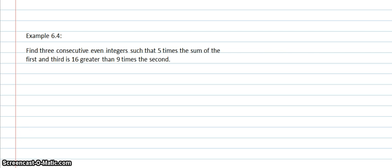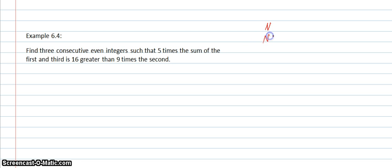The fourth example in Lesson 6 is a consecutive integer problem. This time we're looking at consecutive even integers, and we need to find three of them. For our three consecutive even integers, I'm going to set up n, n plus 2, and n plus 4. Because if they're consecutive even integers, they're going to be going by twos.